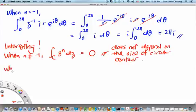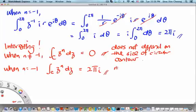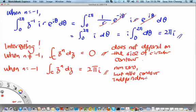Now more importantly, when n is equal to minus 1, this contour integral dz will be equal to 2 pi i. So this is nonzero, but also contour independent.